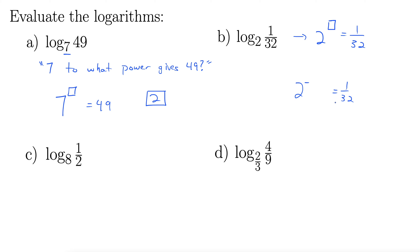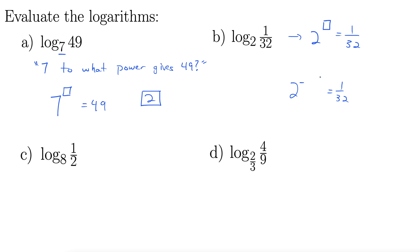I think that's 2 to the 5th. 2 cubed is 8, 2 to the 4th is 16, 2 to the 5th is 32. So 2 to the negative 5th is 1 over 32. Thus, log base 2 of 1 over 32 is negative 5.